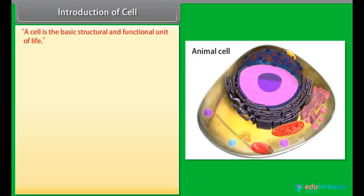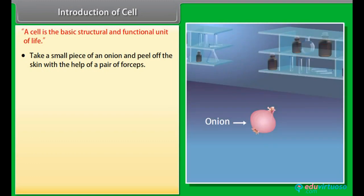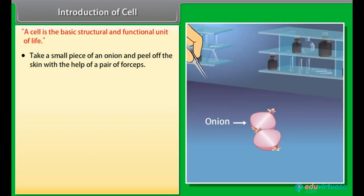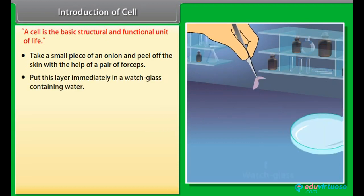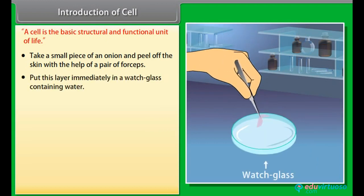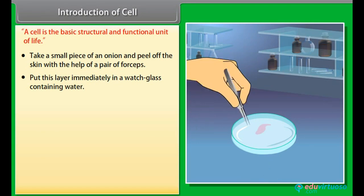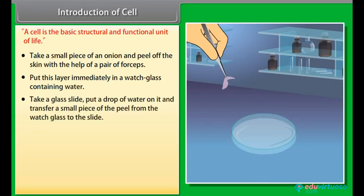A cell is the basic structural and functional unit of life. Experiment: Take a small piece of an onion and peel off the skin with the help of a pair of forceps. Put this layer immediately in a watch glass containing water. Take a glass slide, put a drop of water on it, and transfer a small piece of the peel from the watch glass to the slide.